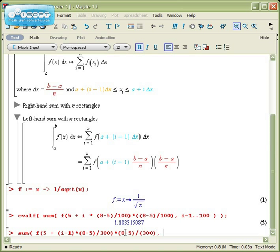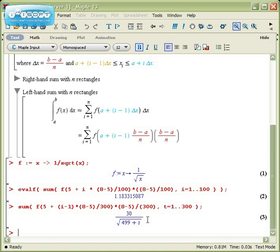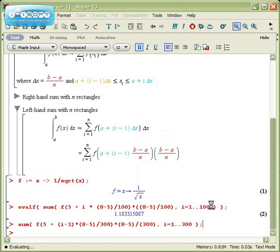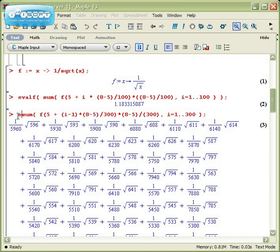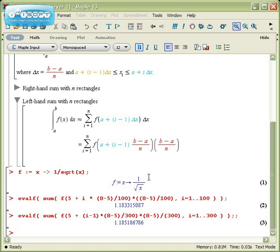b minus a over n. Now that I've entered what I'm adding, I need to include the limits, so i goes from 1 to 300. I'll close this off. If I run this command, I'm going to see 300 calculations. Let me instead wrap this with evalf and get a numeric approximation. This would be the other approximation, and 1.18 looks pretty good.